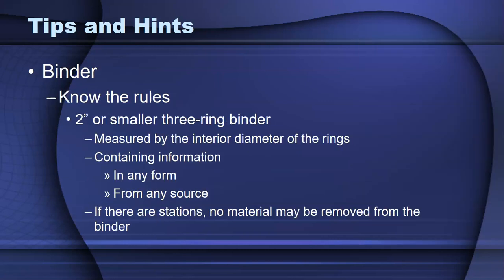For the binder, know the rules about what they can bring in. It's a two-inch or smaller three-ring binder, and the rules state that it will be measured by the interior diameter of the ring, so make sure that interior diameter is no more than two inches. The binder can contain any information in any form from any source. It's important that the student understands that if they are moving from station to station, they are not allowed to remove material from the binder.